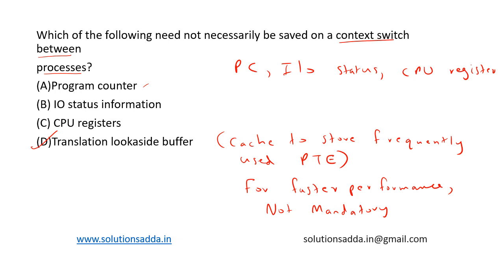After a context switch, when the process resumes, we need to start execution from where it last left off, so the program counter value is needed. We need the I/O status for any I/O related operations, and CPU register values for appropriate operations. The Translation Look-aside Buffer is only used for improving performance — it is not mandatory to save it. Option D is the correct answer.